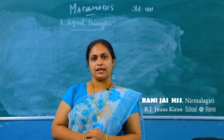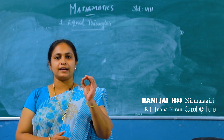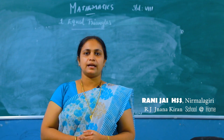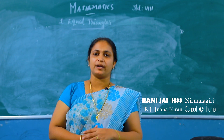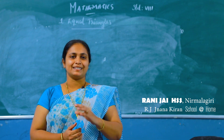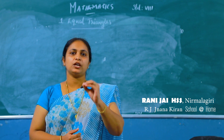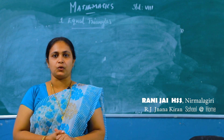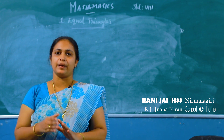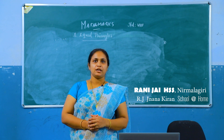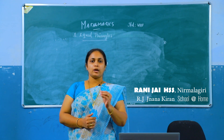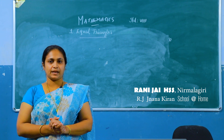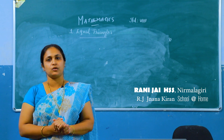You are familiar with triangles. What do you mean by a triangle? A triangle is a three-sided closed figure. You studied some properties of triangles in earlier classes. In this chapter, we discuss what equal triangles are, how two triangles are equal, and some principles based on equal triangles.